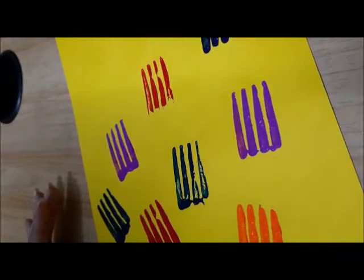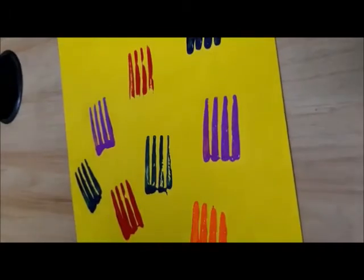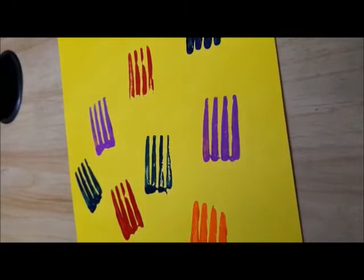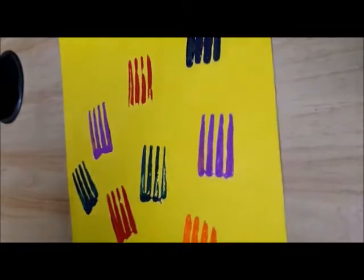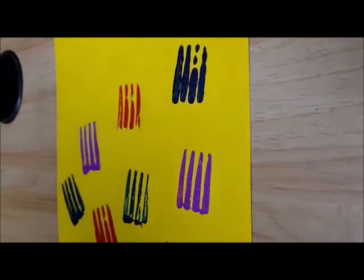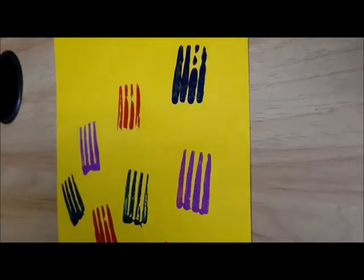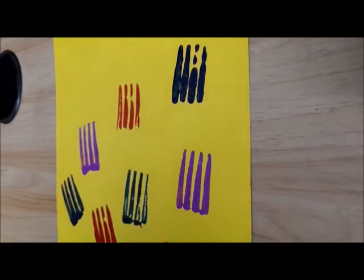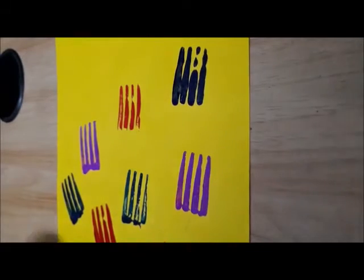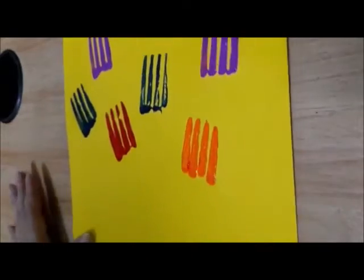So with these fork impressions we've made our flower colors. But now is the time for stems and leaves, so we take our green color and we'll make some stems and leaves. Let's make the stems.